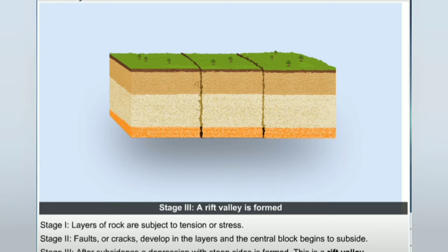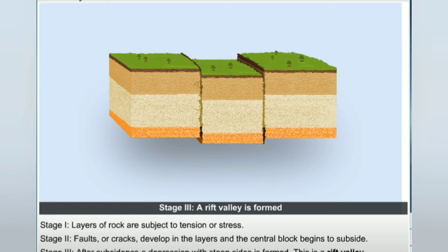Stage 3: After subsidence, a depression with steep sides is formed. This is a rift valley.